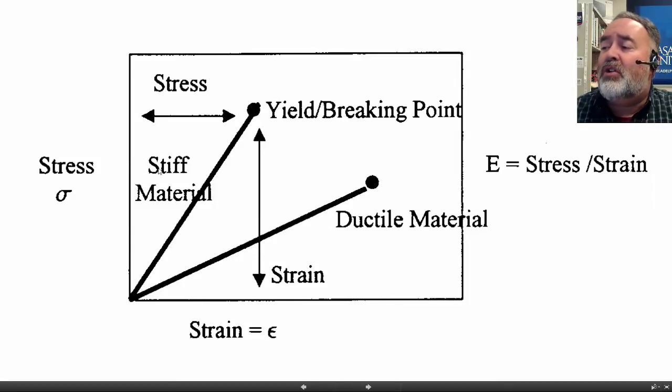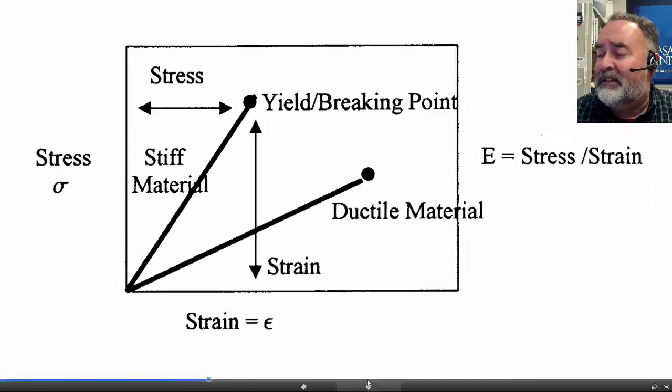So we're going to call this guy a stiff material, and this guy could be called a soft material, but we're going to throw another vocabulary word that we're going to use all semester. And that's called a ductile material. So stiff, and then sort of the opposite of stiff, or less than stiff, is ductile. It just means it moves when you push it. So this material is very difficult to strain. It's very stiff. This material is very ductile. It moves very easily.